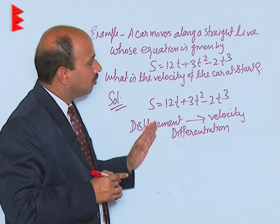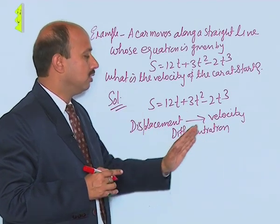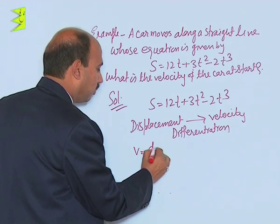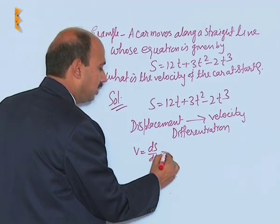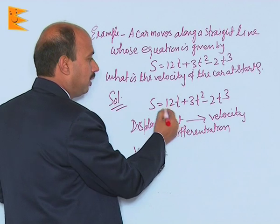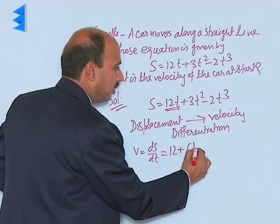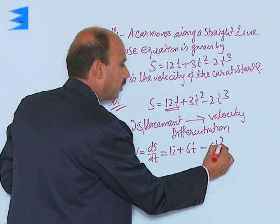Here we are getting from displacement, from position to velocity, so we have to take differentiation. We can write v is equal to ds upon dt. If you differentiate this, you will be getting 12 plus 6t minus 6t square.